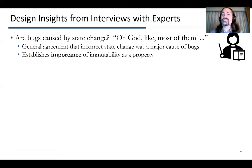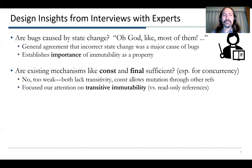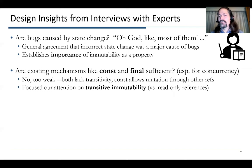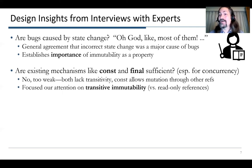We also talked with people about whether existing mechanisms they might be familiar with in popular languages — like const or final — are sufficient, especially when dealing with concurrency. Our experts told us no, this is too weak. Both lack transitivity, which is critical: if you pass a data structure from one thread to another and want immutability to avoid conflicts between threads, you want the whole data structure to be immutable. Furthermore, const disallows mutation through one reference, but not necessarily through others. So talking with them about these problems focused our attention on transitive immutability.